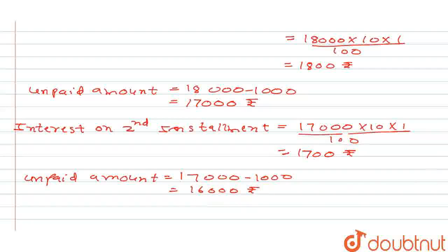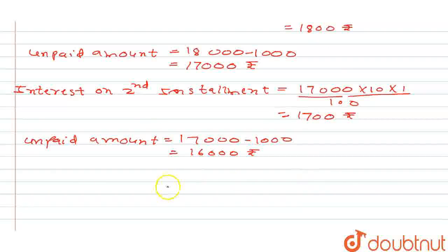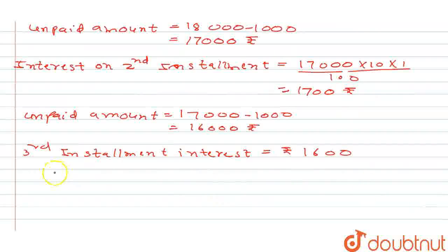So like this he is going to continue till the balance is 0. We can see that third installment interest is going to be Rs. 1,600. So like this he is going to calculate.